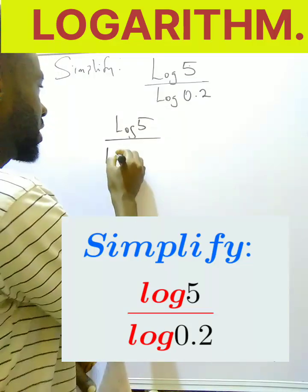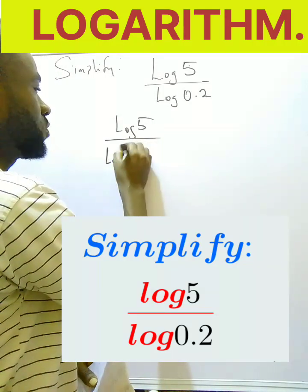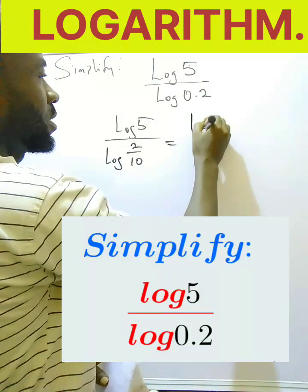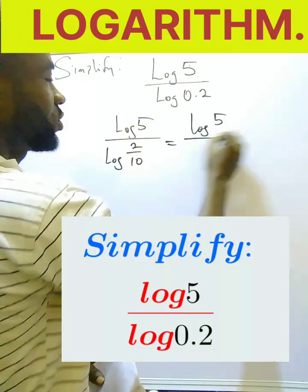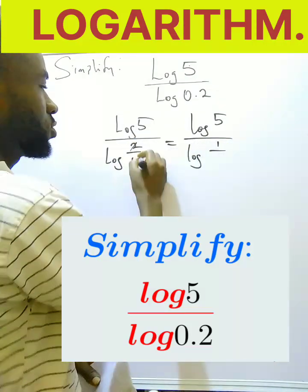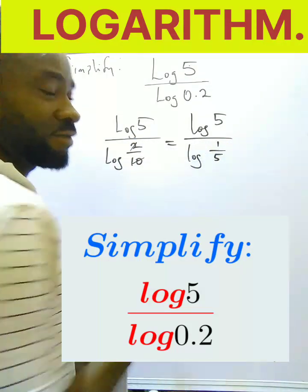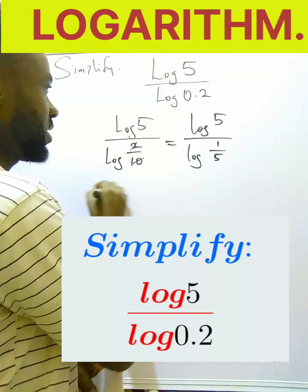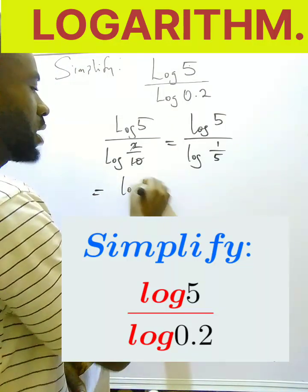I'm going to convert this decimal to fraction: it becomes 2 over 10. Next, I'm going to simplify the fraction: 2 here is 1, 2 into 10 is 5, so I'm having 1 by 5.